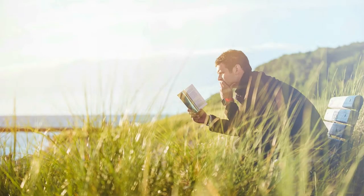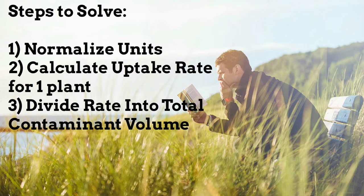This problem will require mass balancing and unit conversion to reach our answer. The approach is to get a unit uptake rate for one plant, then use that rate to divide into the total volume of contamination to get the total number of plants needed.